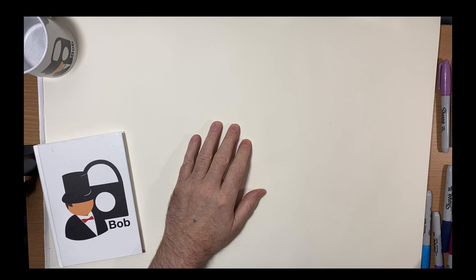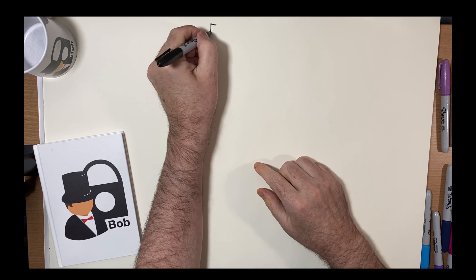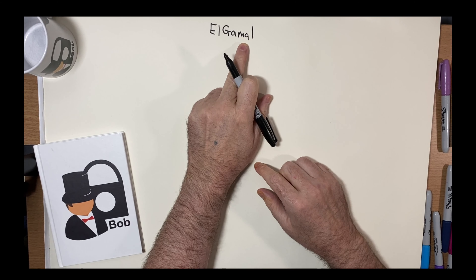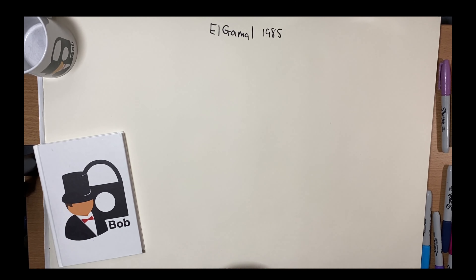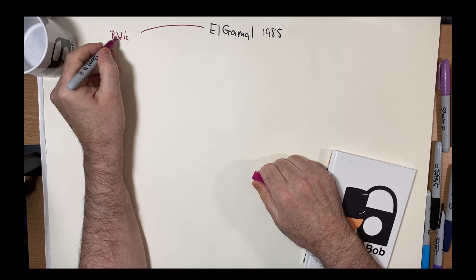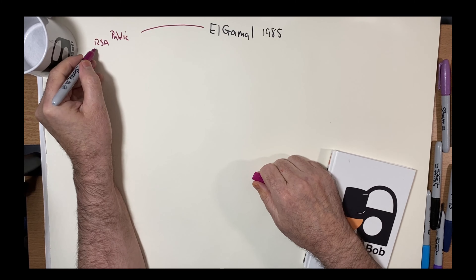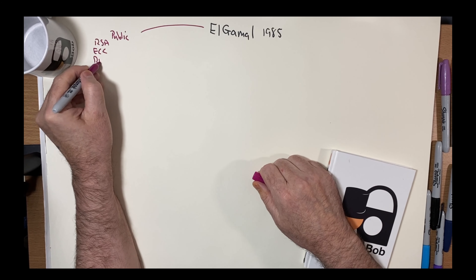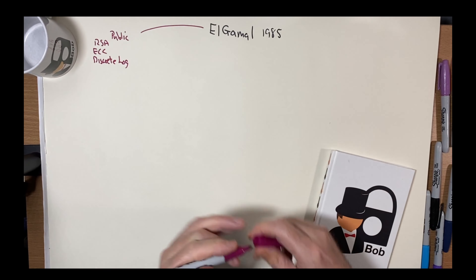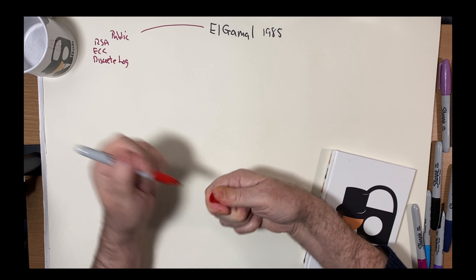Let's look at an interesting method which uses discrete logs — it's the public key encryption method of ElGamal. It was created by Tahir ElGamal in 1985, and we'll see that its application is now interesting in a world of homomorphic encryption. Before we start, let's look at what public key encryption actually is. The main methods we have are RSA, elliptic curve, and discrete logs. The ElGamal method uses the discrete log method.